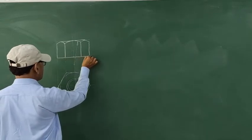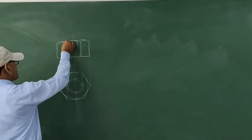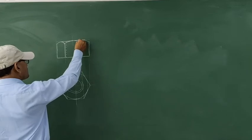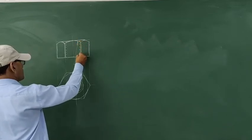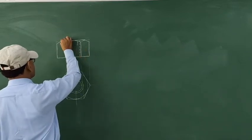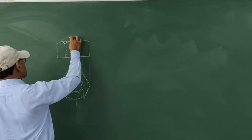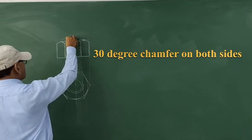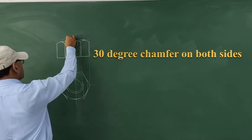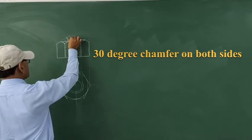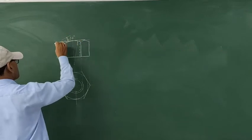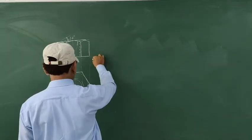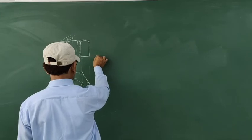Once the three arcs are complete, we chamfer the corners — chamfering means lowering down the sharp corners. The dotted lines are projections from the two circles in the plan, showing that the nut has internal threads. The distance between the dotted lines is 0.8d. A chamfer angle of 30 degrees is drawn on both sides, reducing the sharp corners so that a spanner can fit properly. The elevation and plan of the hexagonal nut are now complete.